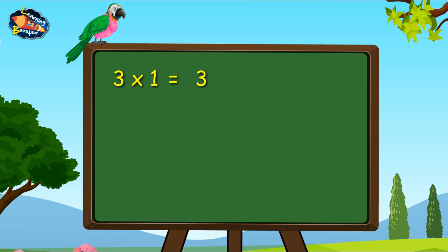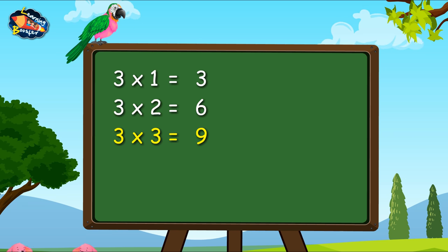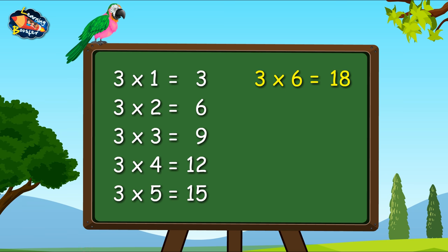Three ones are three. Three twos are six. Three threes are nine. Three fours are twelve. Three fives are fifteen. Three sixes are eighteen.